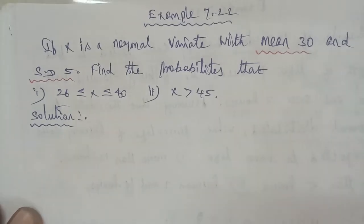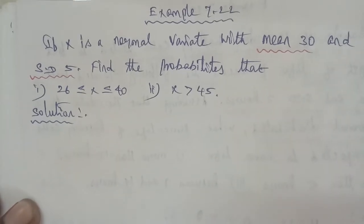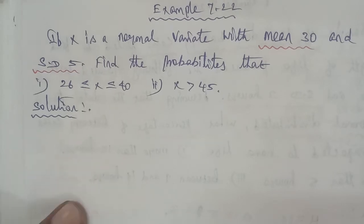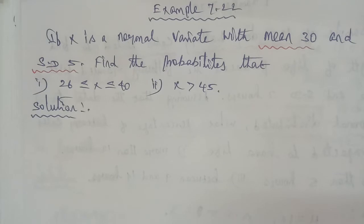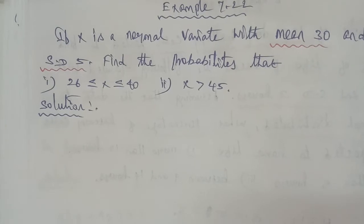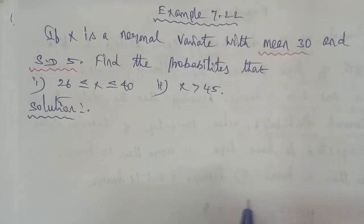Hi students. I'm going to be solving a Business Mathematics exam problem 1.22. Given that capital X is a normal variate with mean 30 and standard deviation 5, find the probability. The formula to use is Z is equal to X minus mu by sigma.